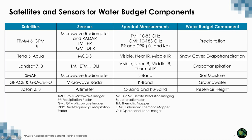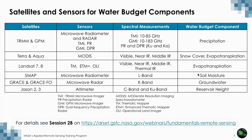Specifically, we talked about TRMM and GPM, which provide precipitation — these data were also used in Nile Basin and Mekong Basin applications. Terra/Aqua MODIS provides evapotranspiration and snow cover data. Landsat provides evapotranspiration. SMAP provides soil moisture. GRACE and GRACE Follow-On provide groundwater. And Jason provides reservoir height. We're going to focus mostly on precipitation, evapotranspiration, soil moisture, and runoff. Here is a link to get more details about all these measurements and how water budget components are derived.